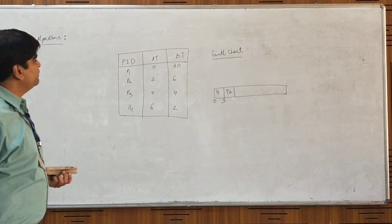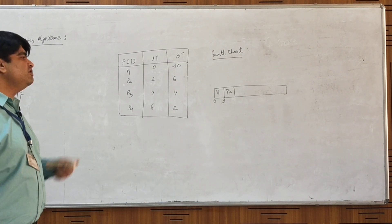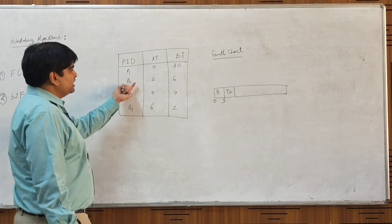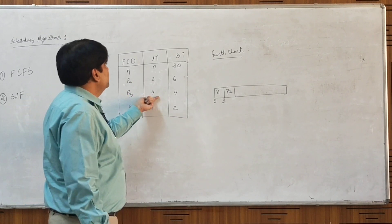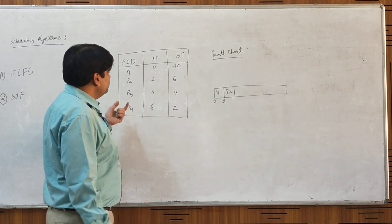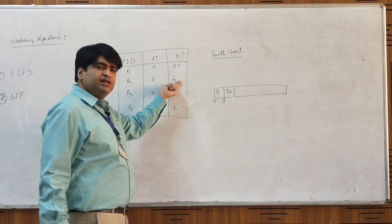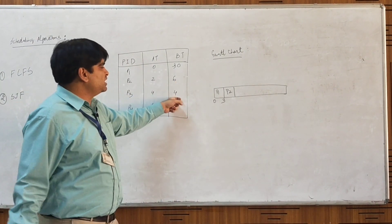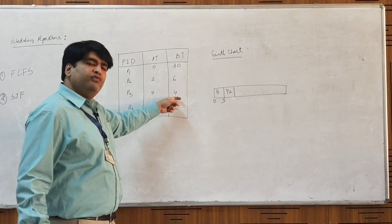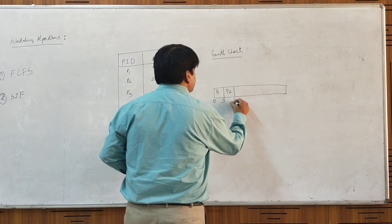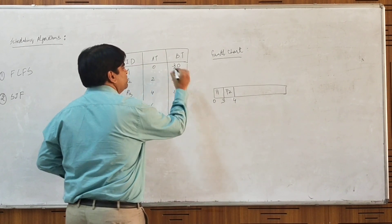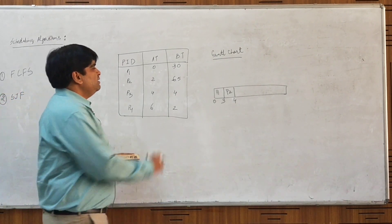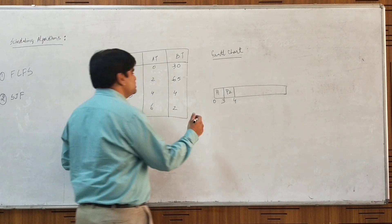This is where the difference kicks in — this type of scheduling is preemptive scheduling; we can take the CPU back once it has been allocated. At t=3 we start P2, but at t=4 we receive a request from process P3. At t=4, the remaining burst time of P2 will be 5 seconds (originally 6, minus 1 unit completed). P3 has a burst time of 4, which is shorter, so we stop P2 and continue with P3. At t=4, P2 is preempted with remaining burst time of 5, and we start P3.